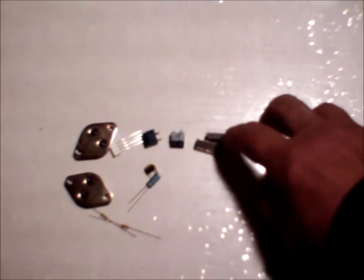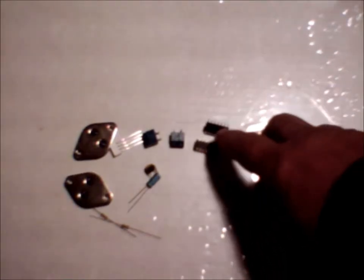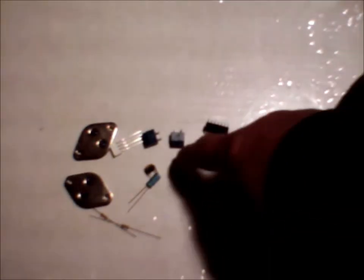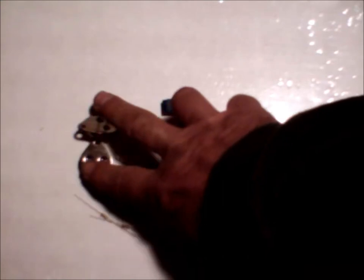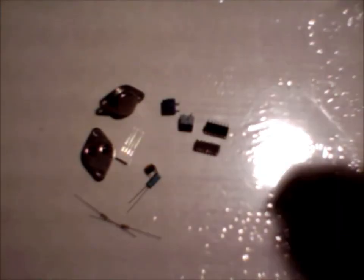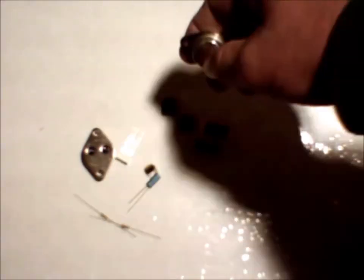But anyway, this is 555 timer and socket, 14 pin socket. These are these little deals like that, that just hook on to wires that go to these transistors, which are NPN 3055, 2N 3055 yeah.